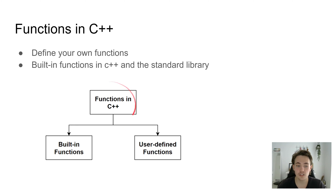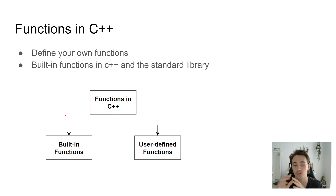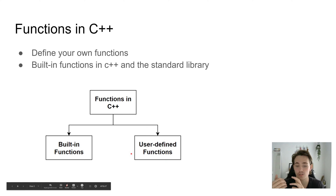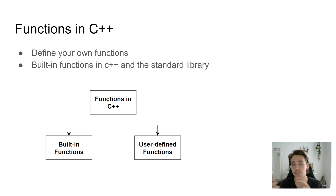There are different kinds of functions in C++. We have the built-in functions from the standard library, which we can import through different libraries and use for various purposes. We also have user-defined functions, where you define your own function with a return type and parameters, perform operations inside the function body, and then return or update values.